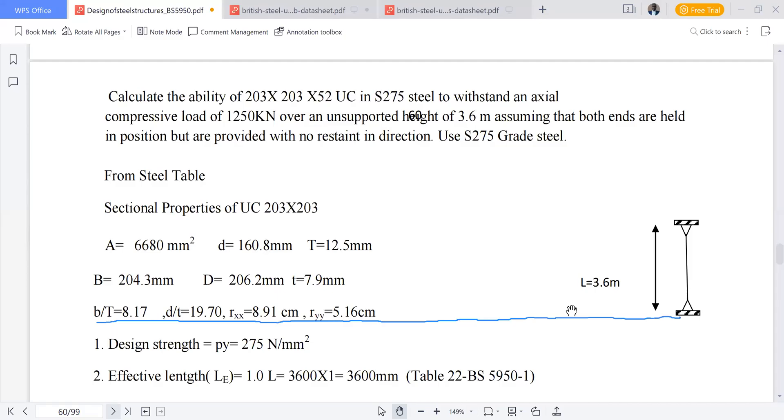Hello, my name is David and welcome to our today's tutorial. Today we are going to look at design of universal steel column. The equation reads: calculate the ability of 203 by 203 by 52 universal column.